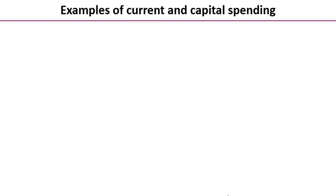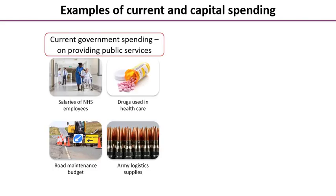Looking at current and capital spending in more detail: on the left-hand side of the screen we have current government spending. Some examples include salaries of NHS employees, drugs used in healthcare such as medicines, maintenance of roads, and supplies for the army.